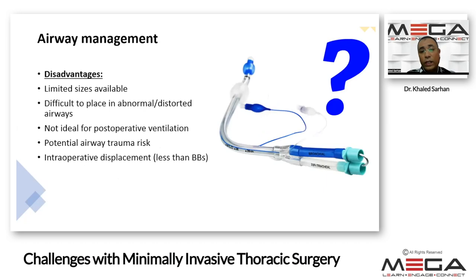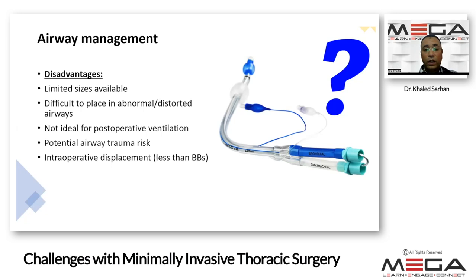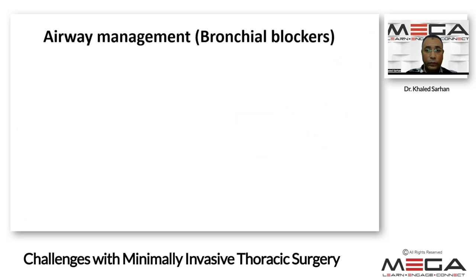However, there are some disadvantages of the double lumen tube. We have limited sizes, so not all patients can be intubated - pediatrics less than eight years cannot be ventilated using a double lumen tube. It is difficult to place in patients with abnormal or distorted airway, not ideal for postoperative ventilation, there is potential for airway trauma because of the large size, risk for intraoperative displacement, and it is less flexible than bronchial blockers.